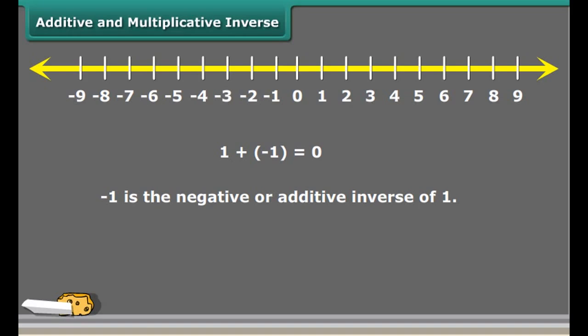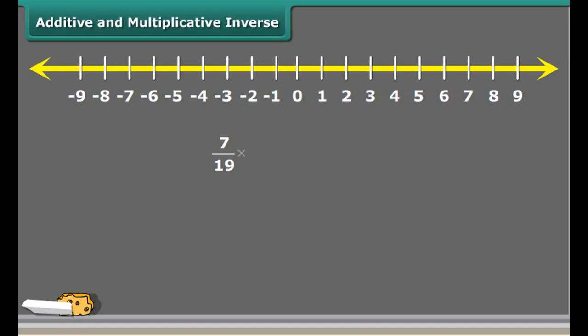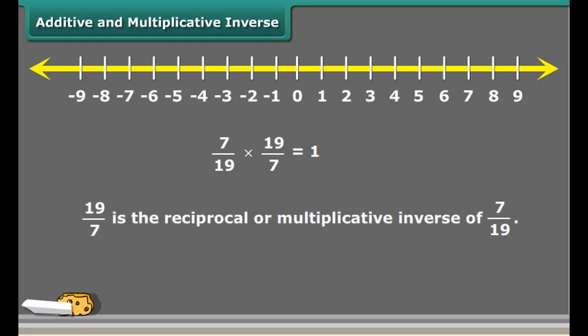You may have come across negative numbers. Is minus one the negative of one? Yes, it is, because one plus minus one equals zero. So we say that minus one is the negative or additive inverse of one. Likewise, for any rational number, say three by seven, minus three by seven will be its additive inverse.